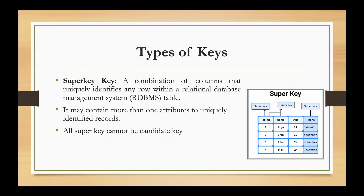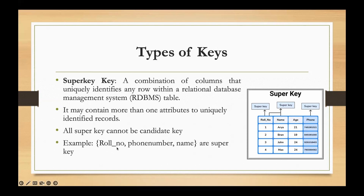Not all super keys are candidate keys. For example, consider a table with a roll number column. Roll number alone is a super key. Similarly, name alone can be a super key if it uniquely identifies every record in the database table. Any combination that can uniquely identify a record can be considered a super key.